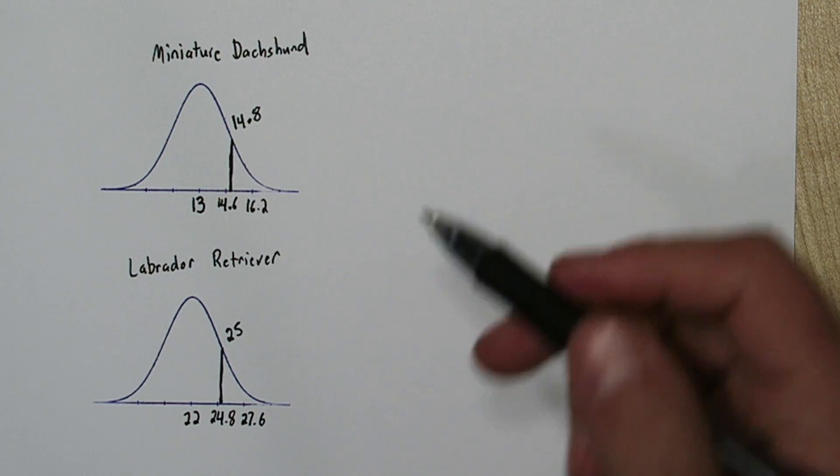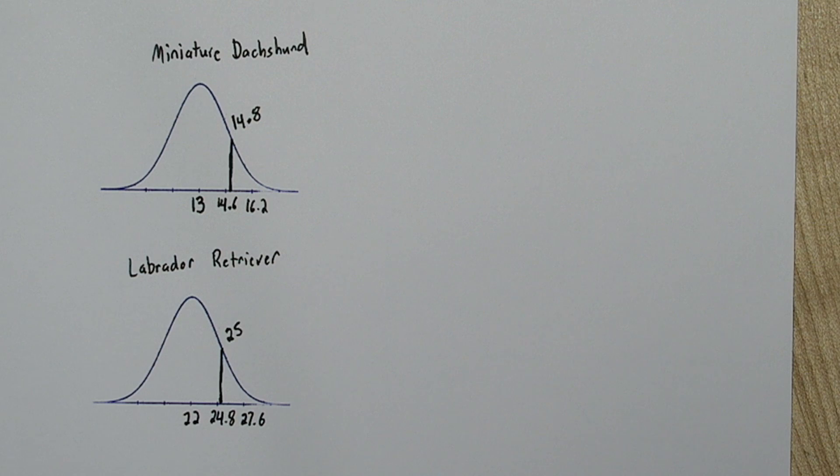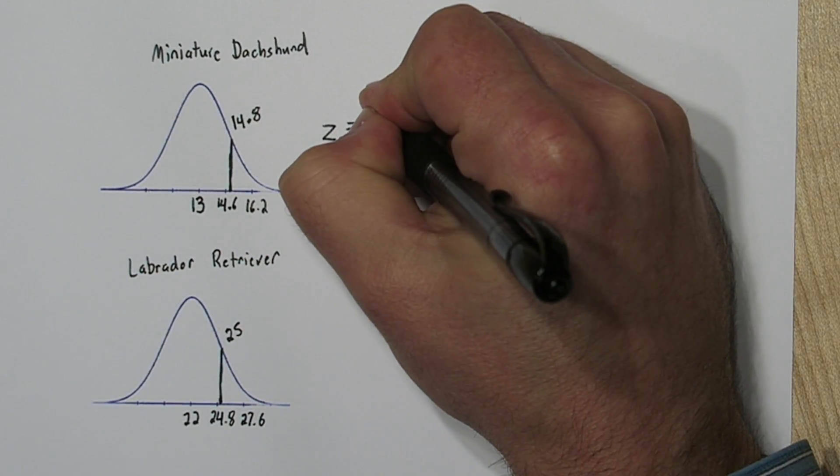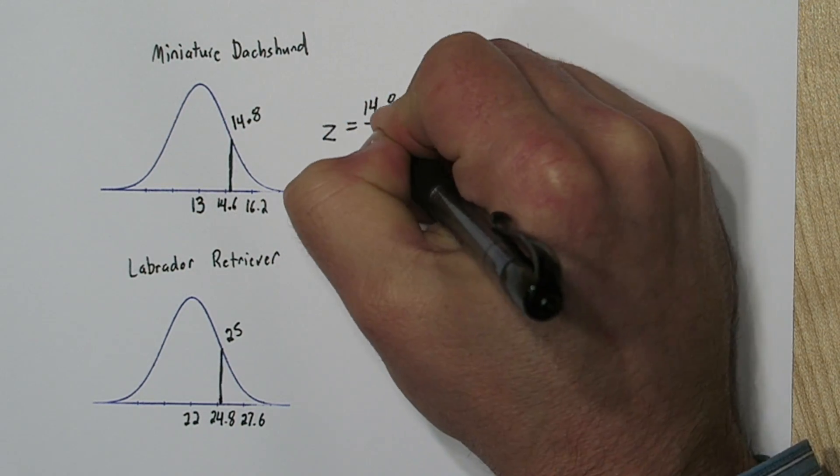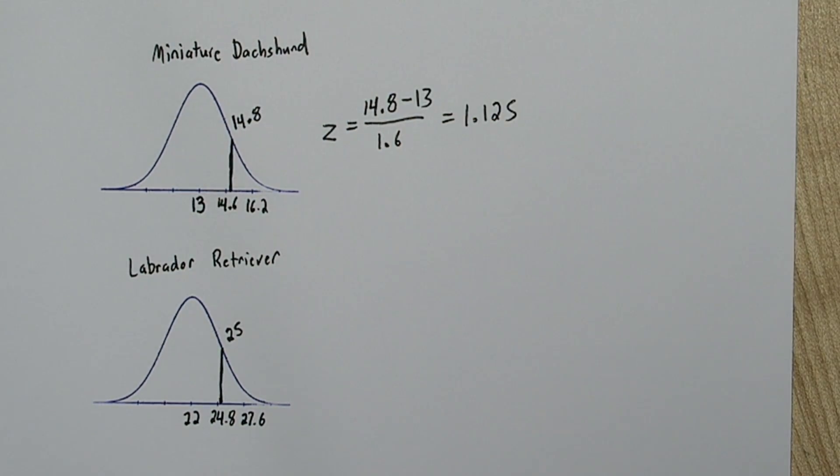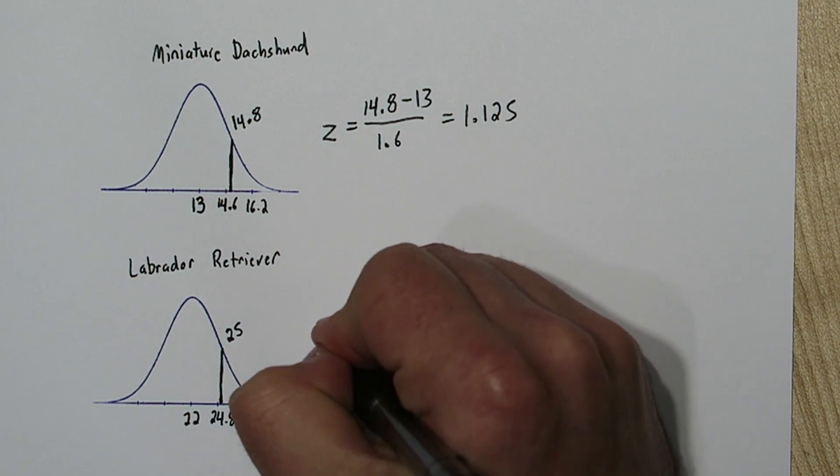So these are too close to call to figure out which one is running faster relative to its breed. So what we can use is z-scores. So for the Dachshund, the z-score was 1.125, meaning it was running 1.125 standard deviations above the mean.